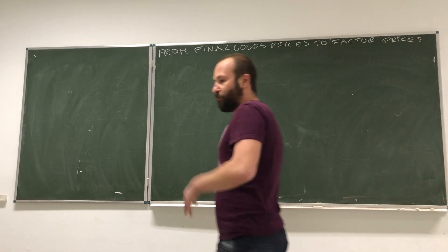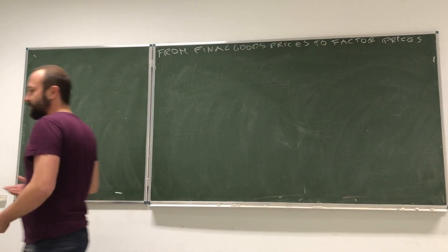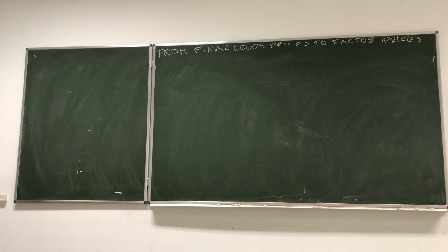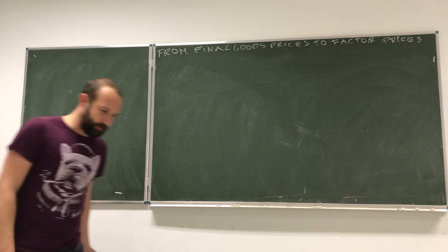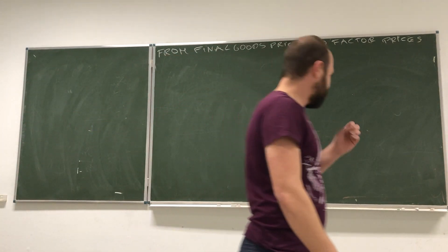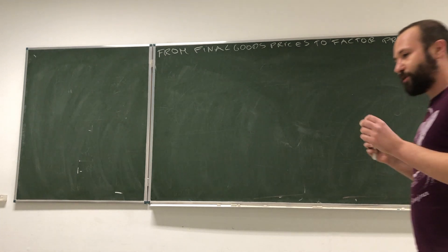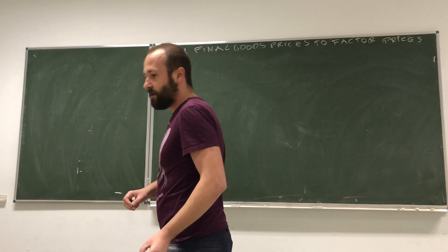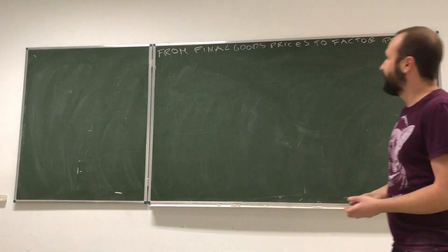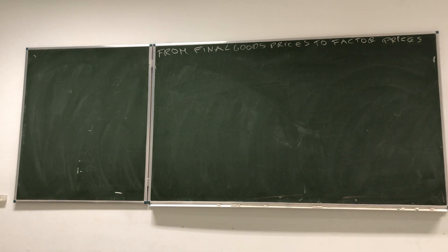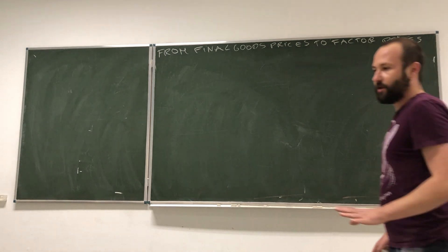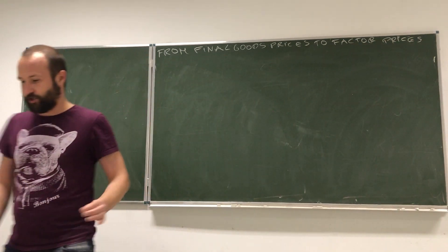In the last video we were discussing the price equalization proposition, specifically the part that stated once we have prices of factors of production, we can directly derive prices of final goods. Now we are going to go in the opposite direction.